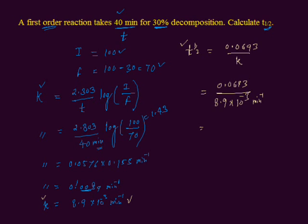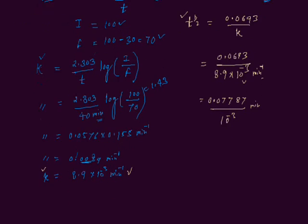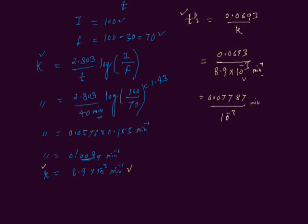You can divide 0.693 by 8.9 and you will get 0.07787. In the denominator we have 10 to the power minus 3, and the unit is per minute. If it goes to the numerator, you will have minutes. We can write this number in scientific notation — we move the decimal after 7, and you will get 77.87. Since we move the decimal to the right side after 3 digits, you will get 10 to the power minus 3, and in the denominator we also have 10 to the power minus 3, so we can cancel same exponent values.